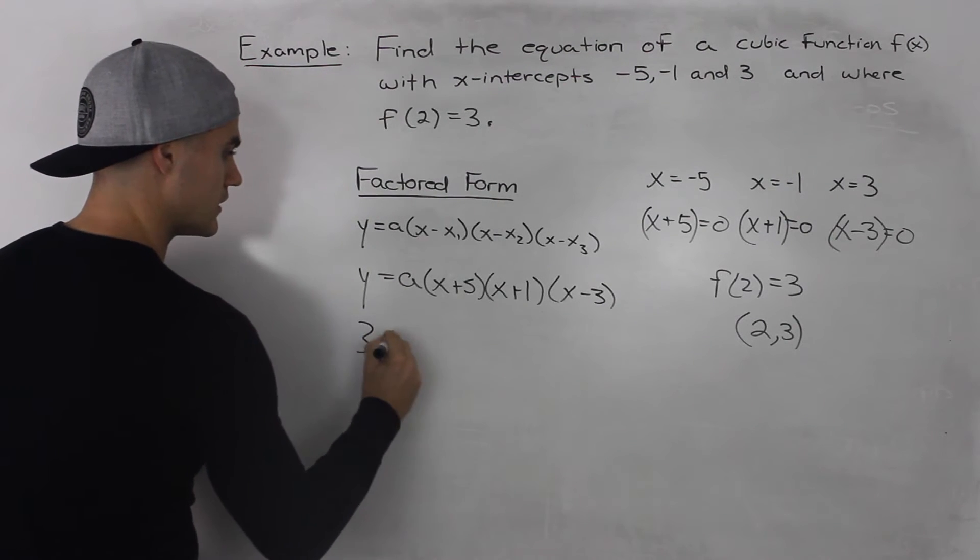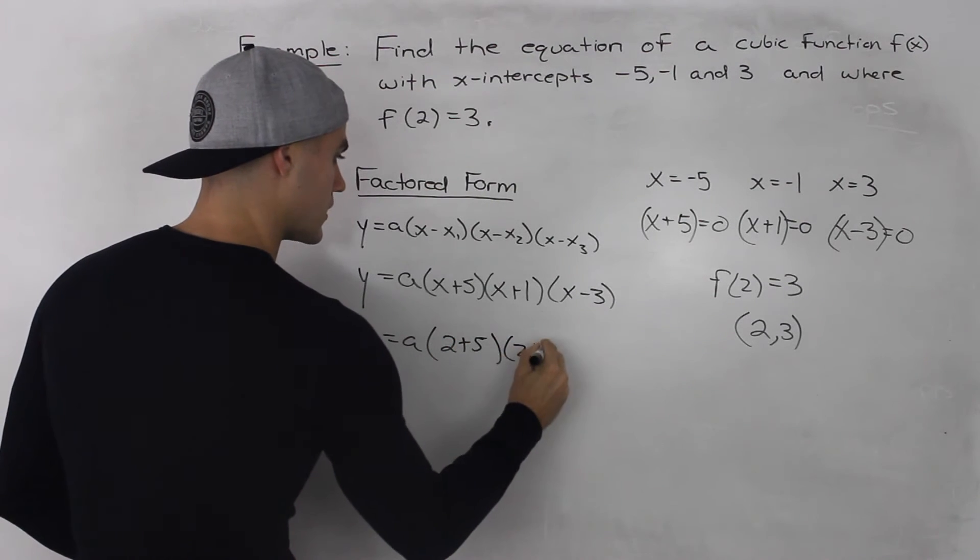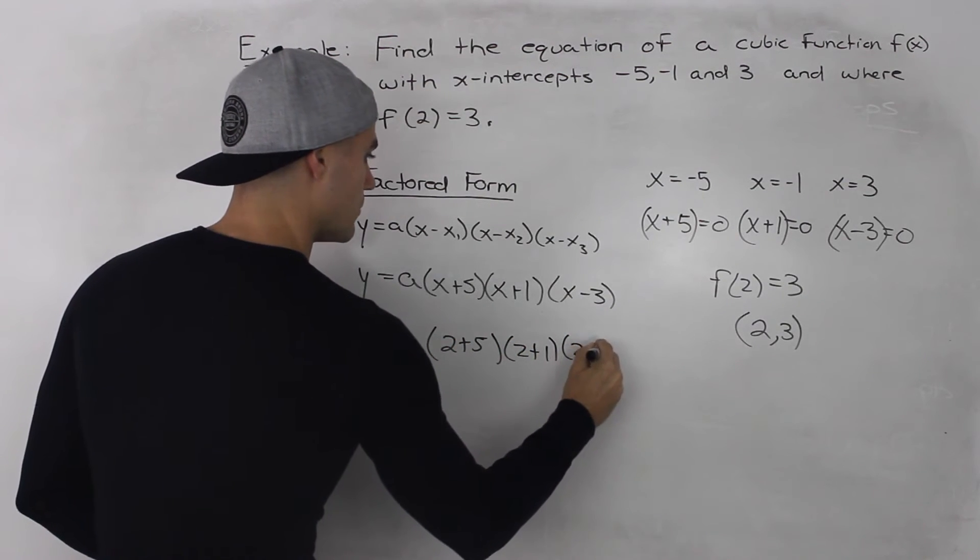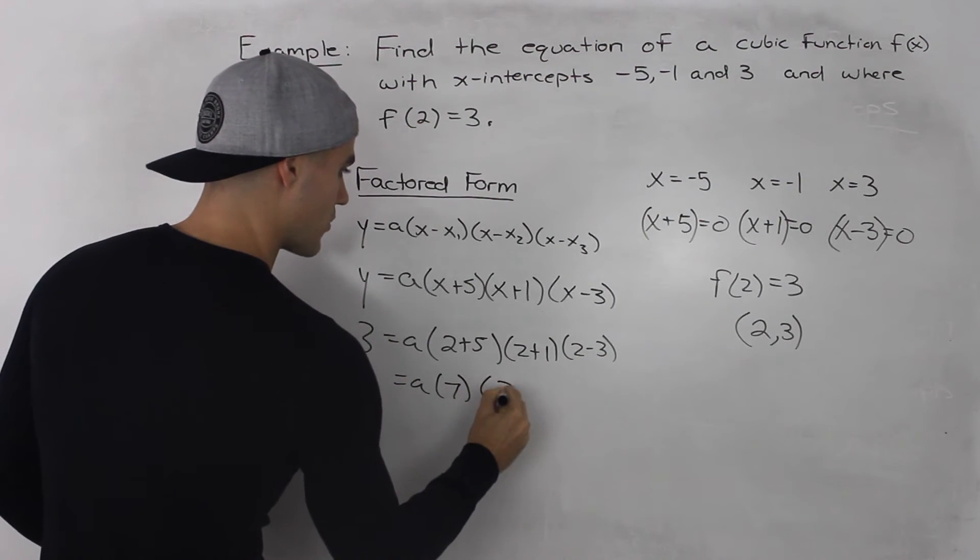So 3 = a(2 + 5)(2 + 1)(2 - 3). And then let's simplify these brackets.